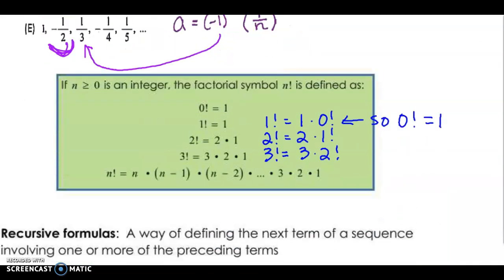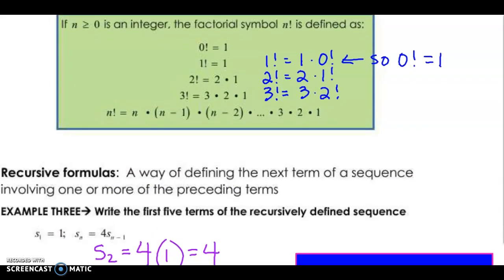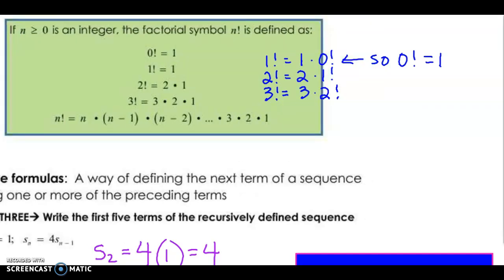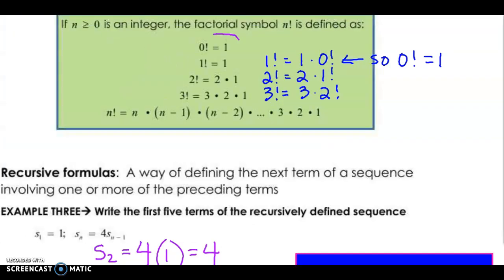So, moving on to factorials. If n is greater than 0, is an integer, the factorial symbol is n, and then the exclamation point, it's defined as. Now, this is just a definition, that 0 factorial equals 1. Just memorize it. It's really the only thing that works, because if 1 factorial equals 1 times 0 factorial, 0 factorial has to be equal to 1. What does factorial mean? It just means multiply that number times every whole number below it, and that's it. So, 5 factorial is just 5 times 4 times 3 times 2 times 1. Okay, so let's practice.